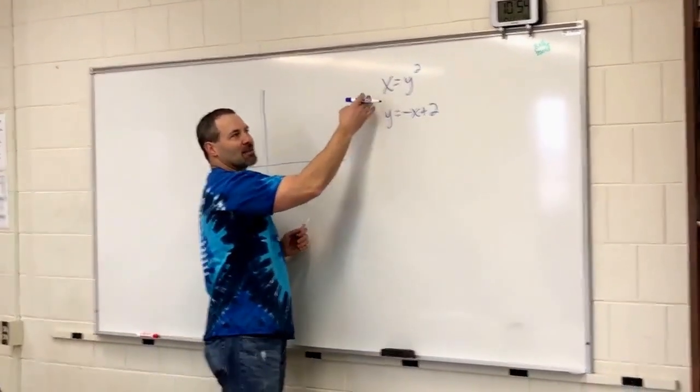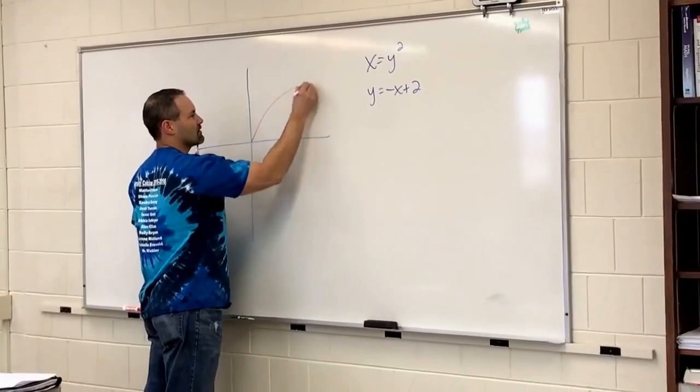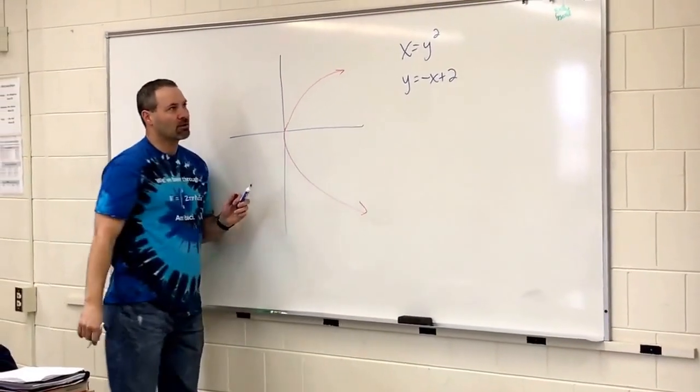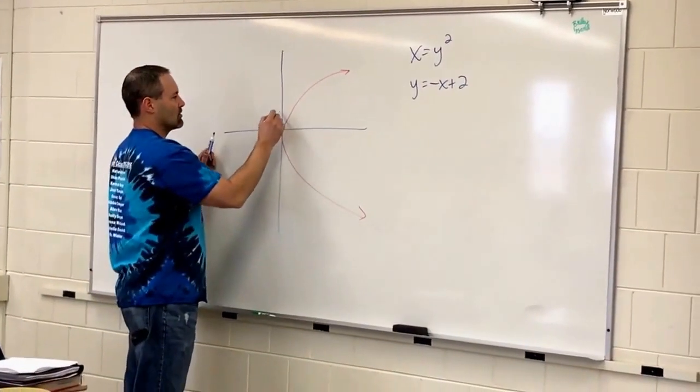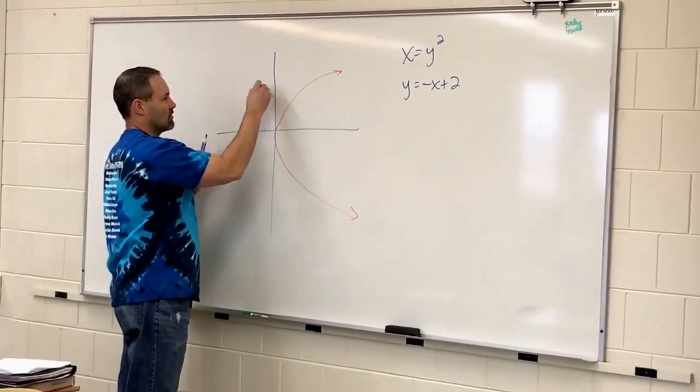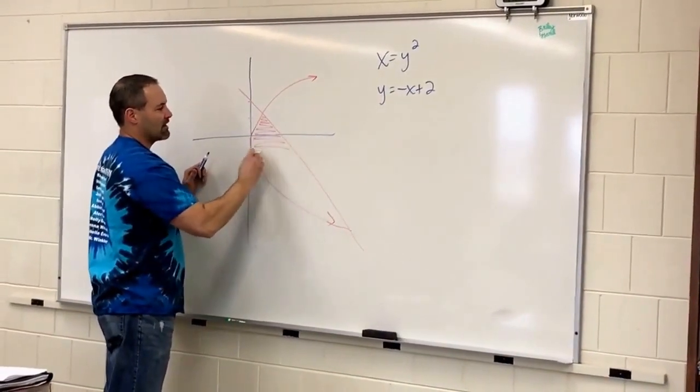Because you could solve, you could do plus or minus the square root, so it's y equals the square root of x, y equals negative square root of x, so we have a parabola, and then negative x plus 2. So, we're looking for that area.